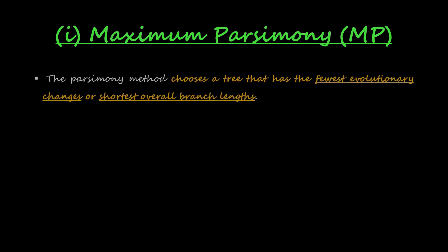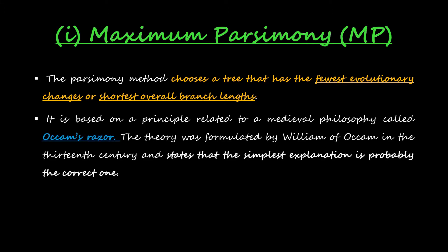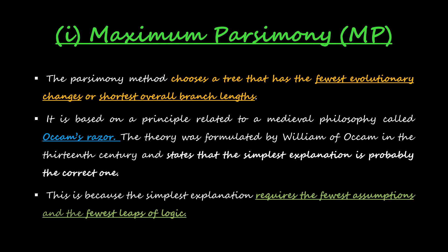Maximum Parsimony (MP): the parsimony method chooses a tree that has the fewest evolutionary changes or shortest overall branch lengths. It uses a principle called Occam's Razor, formulated by William of Ockham in the 13th century, which states that the simplest explanation is probably the correct one. In maximum parsimony, they go with the fewest evolutionary changes because the simplest explanation requires the fewest assumptions and the fewest leaps of logic.